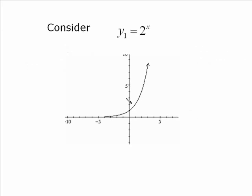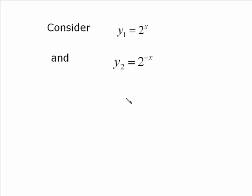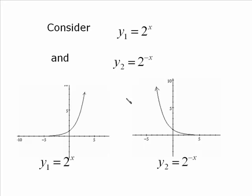One more. y₁ is equal to 2 to the x. So there's your exponential function with a base of 2, a very steep curve. And then I want to take a look at y₂ is equal to 2 to the negative x. So I have replaced x with negative x. There's the first curve, y₁ is equal to 2 to the x. And when we reflect it in the y-axis, it's a mirror image around the y-axis, and you get that curve.